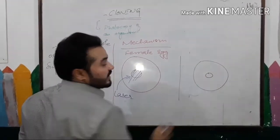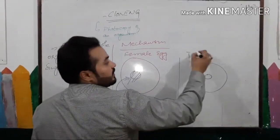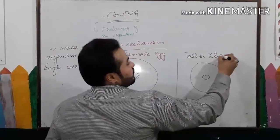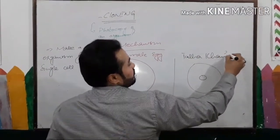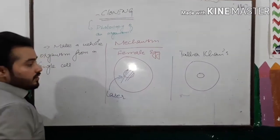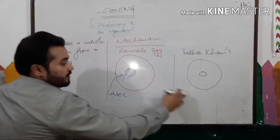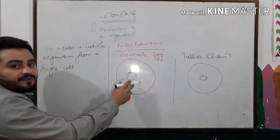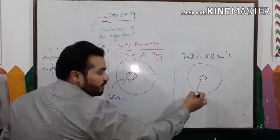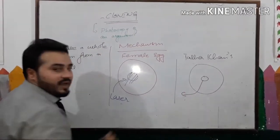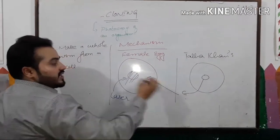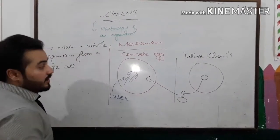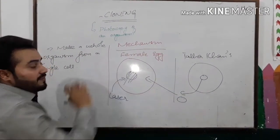Here is a cell — let's suppose this is my cell, Allah Khan's cell. Destroy the nucleus of the female egg cell, remove the nucleus of my cell, and insert the nucleus of my cell into the female egg cell.